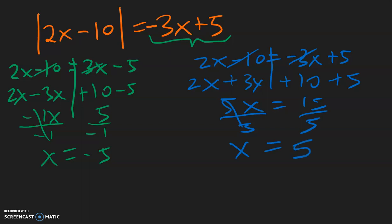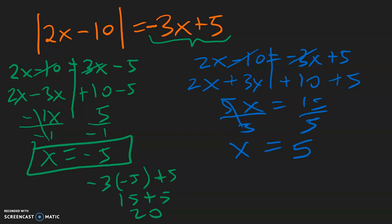And now here is the new part — how to check for extraneous solutions. You look at the right side of the original equation that I underlined in green: this negative 3x plus 5. You know that absolute value has to equal a positive. So what you want to do is plug in your x value — negative 5 — into here and see if you get a positive or negative answer on the right side. So using the green equation: negative 3 times negative 5 plus 5 — negative 3 times 5 is 15, plus 5 is equal to 20. So that means x equals negative 5 is a real answer.